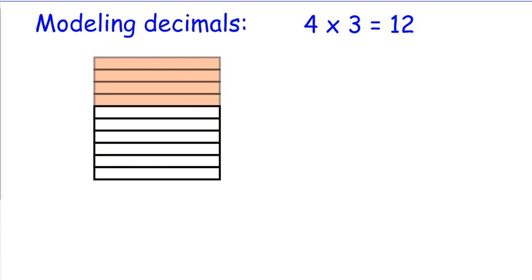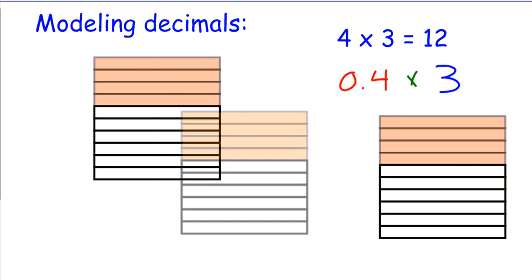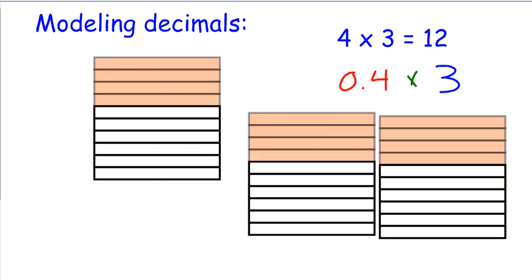First, we're going to take a look at some modeling. Many of you know that 4 times 3 is equal to 12. But what happens when we actually model 4 tenths? You can see the shaded part makes up 1, 2, 3, 4 out of a total of 10 parts. So if I were to model 4 tenths times 3, what will my answer be? Let's go ahead and do that. Here's 1, 2, and with the model I have already,